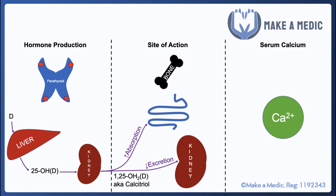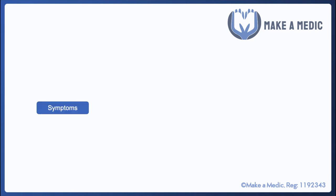Calcitriol has two main effects. It goes to the GI tract where it can increase the absorption of calcium, and it acts within the kidneys where it decreases renal excretion. Both of these changes result in an increase in serum calcium concentration.